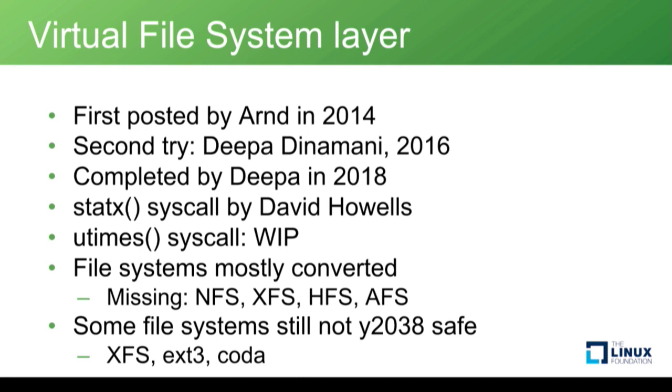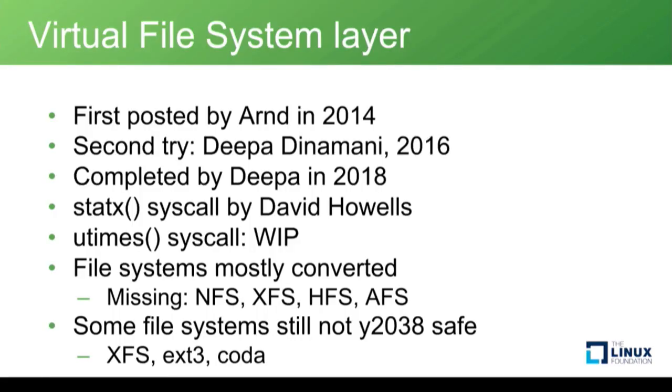Another piece of the puzzle was the statx system call. We have over a dozen different implementations of the stat system call, with architecture-specific structures and on some architectures three or four different binary layouts of stat. statx replaces all of them — any new architecture added in the future will only implement statx, and glibc can implement all the others based on that.